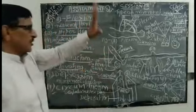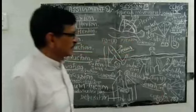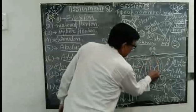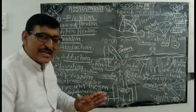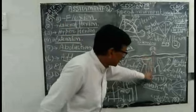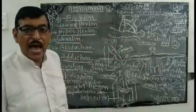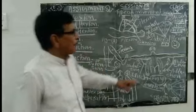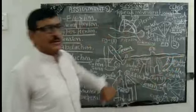And next, adduction. When the body part or the digits move away from the center line, that is abduction. And when the body part or the digits come back together near the center line — near the center of gravity of the hand and foot — that is known as adduction. So, adduction is opposite of abduction.